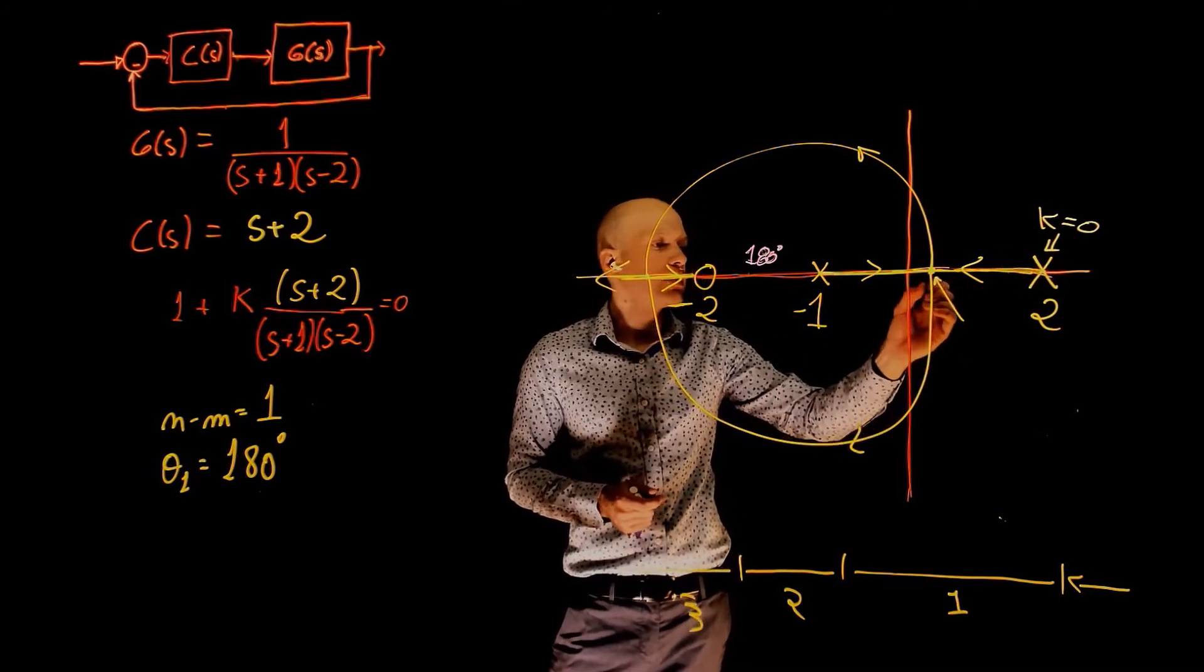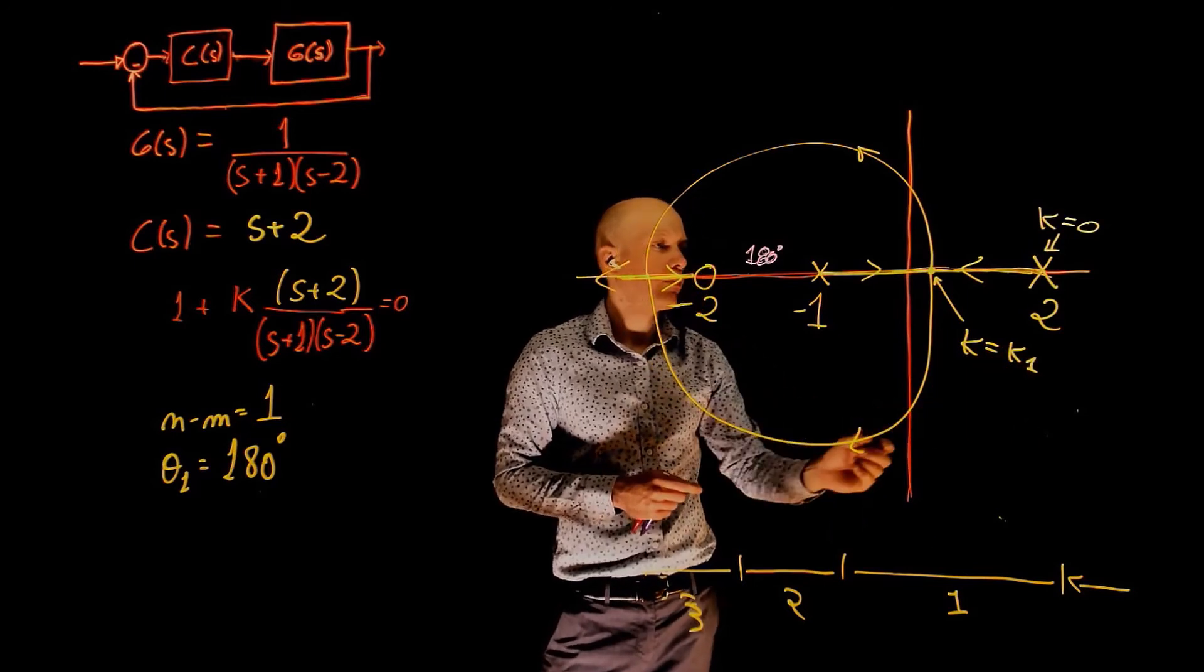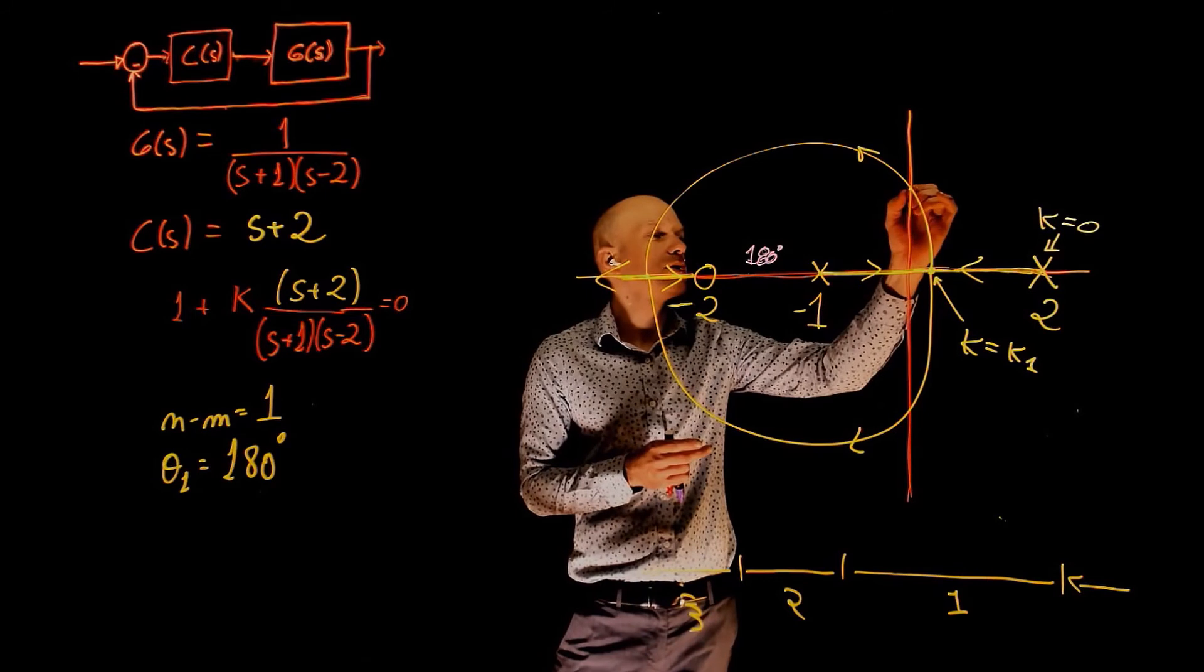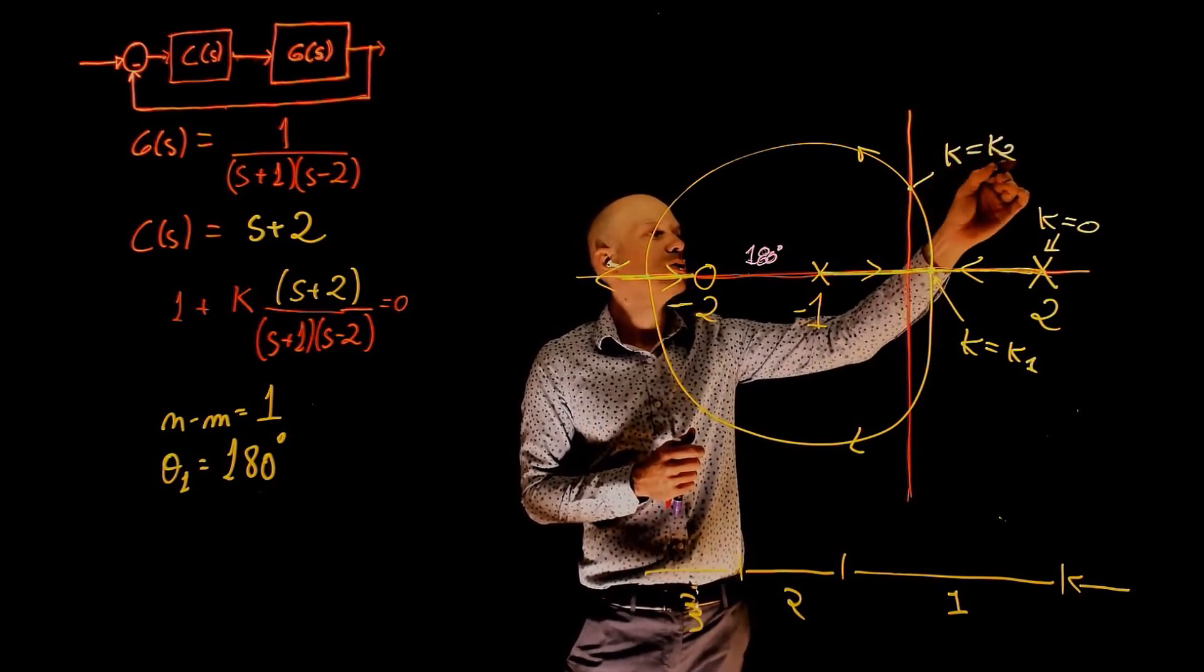Let's assume that at this point where these two poles meet, we have K equals to K1. Here, when they cross the imaginary axis, let's assume that the value of K that brings the poles there is K equals to K2.